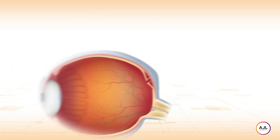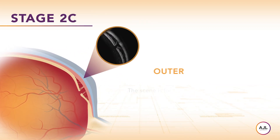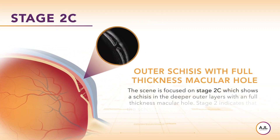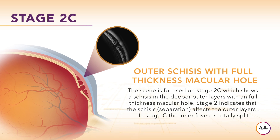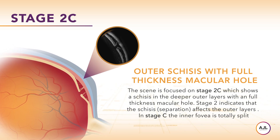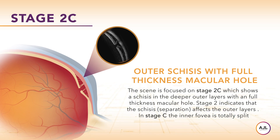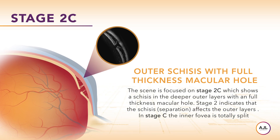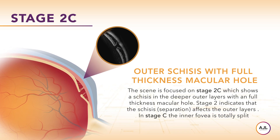Stage 2c shows schisis in the deeper outer layers with a full thickness macular hole. Stage 2 indicates that the schisis affects the outer layers. In stage C, the inner fovea is totally split.